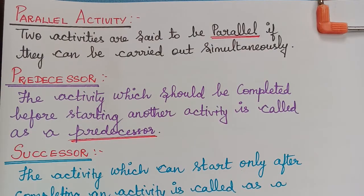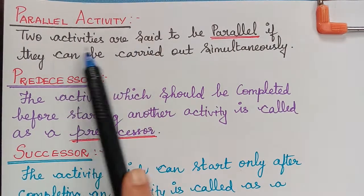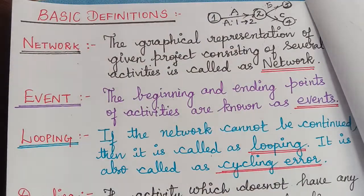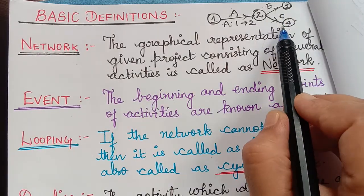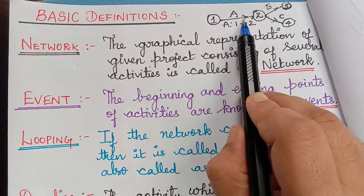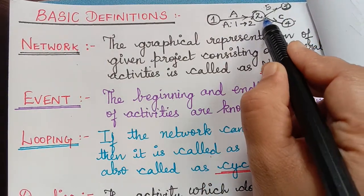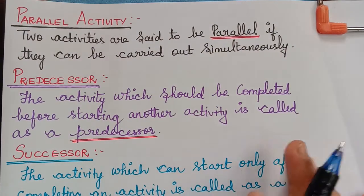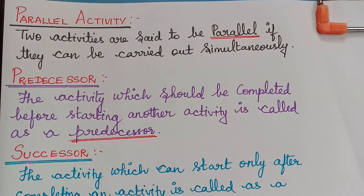Now here we have some more definitions. Parallel activity: two activities are said to be parallel if they can be carried out simultaneously. In the diagram, activity B and activity C are parallel to one another because they can be carried out simultaneously after completing activity A. We can have more parallel activities as well. For example, while constructing a building, the foundation work and the digging of a well can be carried out simultaneously — those two become parallel activities.